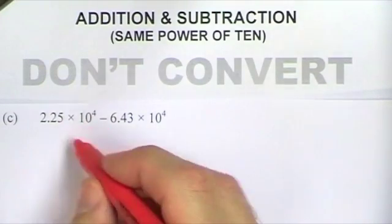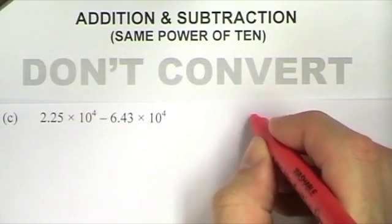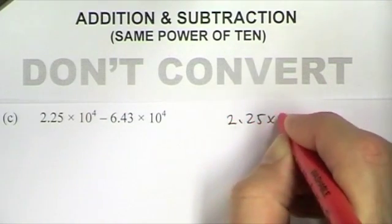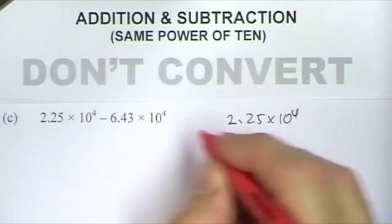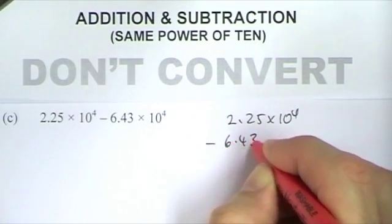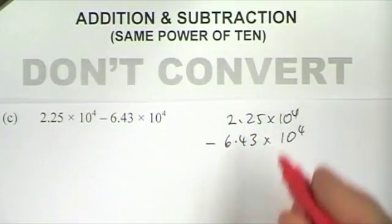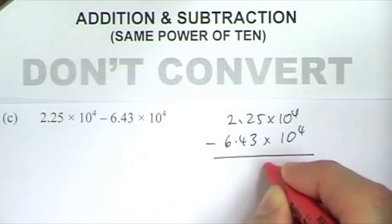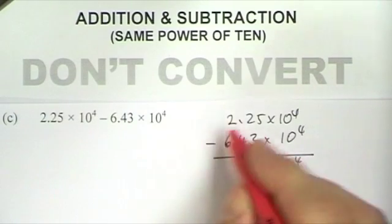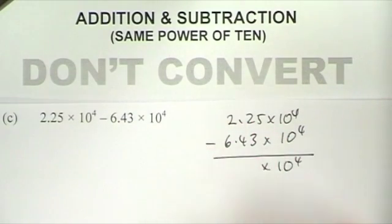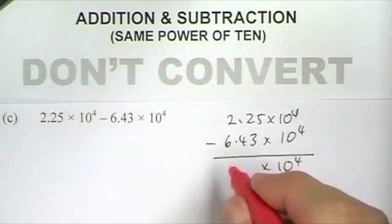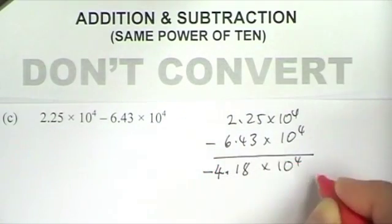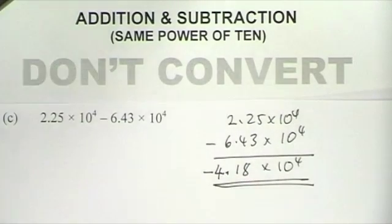In this next question I've got matching powers of 10 and it's a subtraction. So I'm going to do 2.25 times 10 to the 4 take away 6.43 times 10 to the 4. Both are 10 to the 4, so when I subtract I'm going to get a times 10 to the 4. And 2.25 take away 6.43 gives me minus 4.18 times 10 to the 4. And that's my final answer.